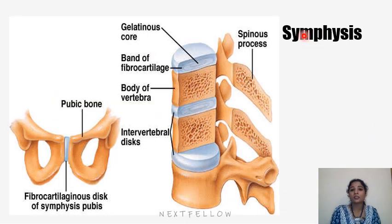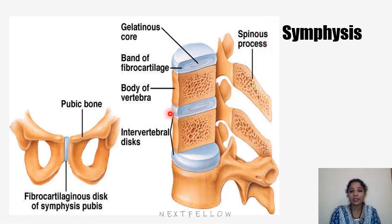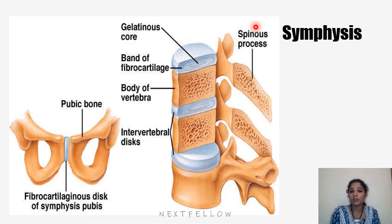Secondary cartilaginous joints are otherwise called symphyses. The bones are covered by articular hyaline cartilage, and the joint cavity is filled with white fibrocartilage. You can see both varieties of cartilage in symphysis, whereas in synchondrosis only hyaline cartilage is present. These joints are usually located in the midline and are slightly mobile; examples include the pubic symphysis and intervertebral joints.